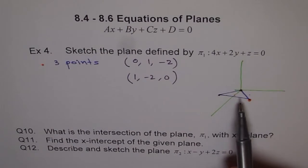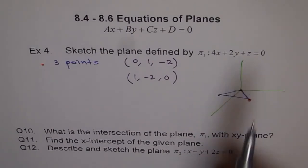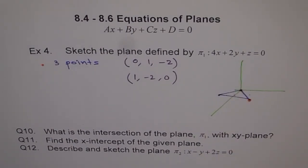So, that is how we draw a plane where such equations are given. Now, the question for you here is question 10. What is the intersection of plane pi 1 with xy plane? Okay? Figure that out.